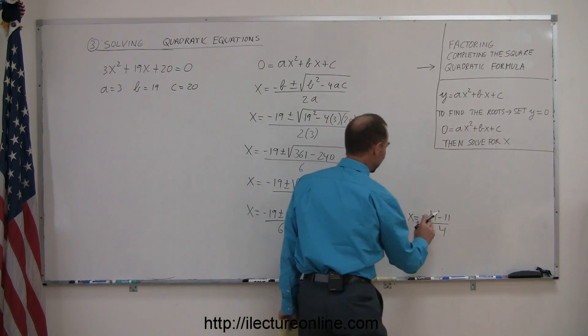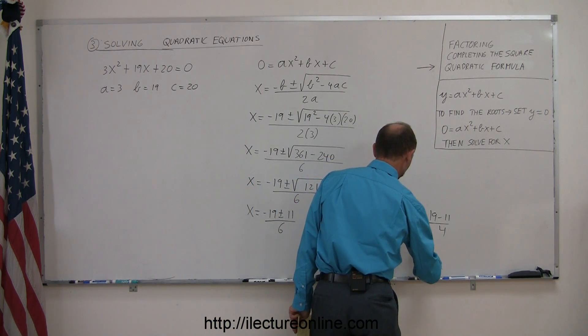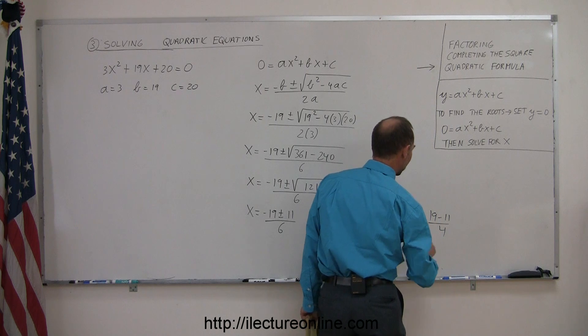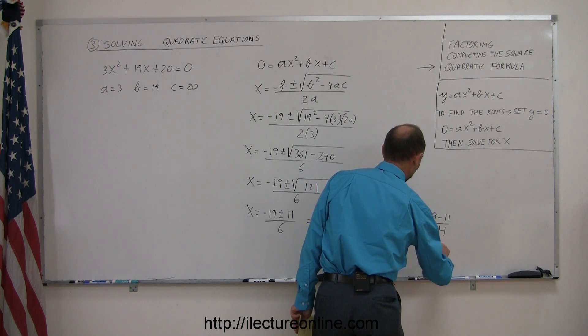Or if I take the negative possible solution, minus 19 minus 11, that's minus 30 over 6.